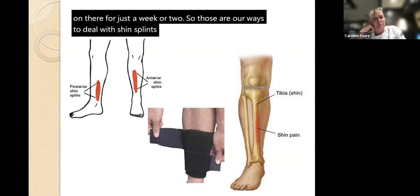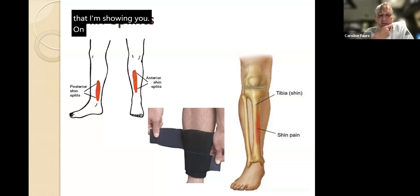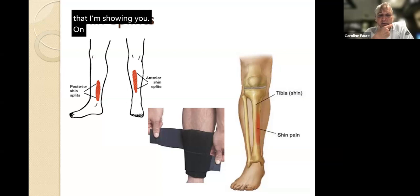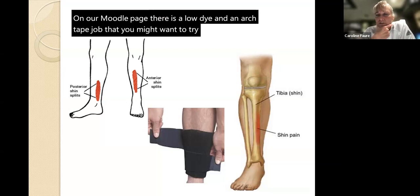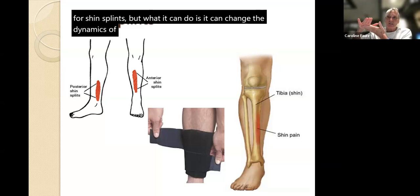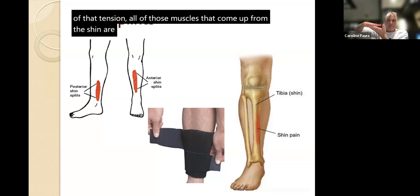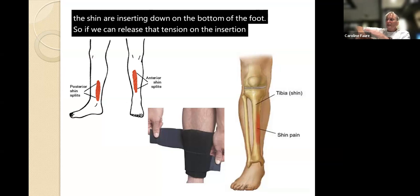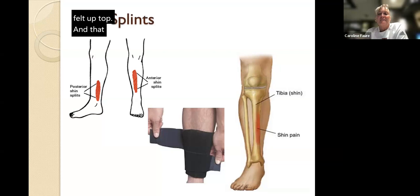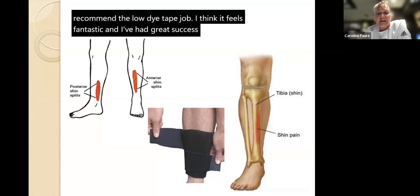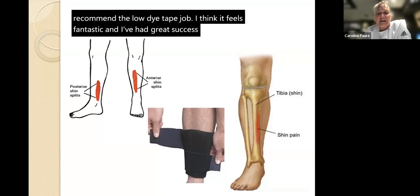On the Moodle page there's a low die and an arch tape job. They're not cures for shin splints, but they can change the dynamics of the tension on the muscles on the bottom of the foot. Those muscles insert down on the bottom of the foot from the shin, so releasing tension at the insertion point can relieve some of the tension felt up top. I highly recommend the low die tape job - it feels fantastic and I've had great success with it.